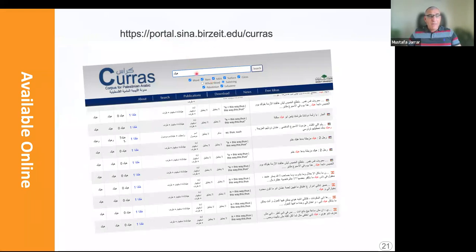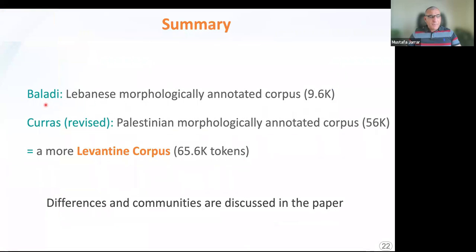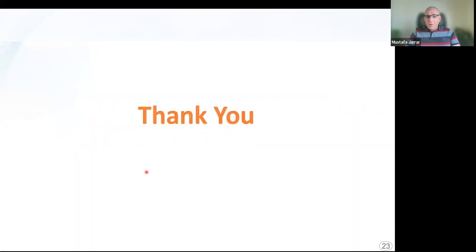Both corpora are available at this link, so people can search and retrieve all annotations and see everything. They can see whether it is from Lebanese or Palestinian, and it is also available for NLP research. To summarize, we presented a new Lebanese morphologically annotated corpus. We revisited an existing Palestinian morphologically annotated corpus. Together, we presented a more complete Levantine corpus. The details can be found in the paper. That is the end of our talk. Thank you very much for listening, and we are happy to answer any questions by email or directly.